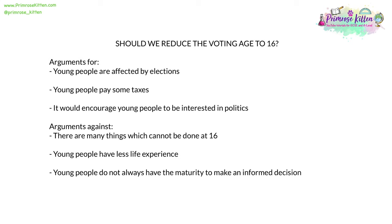A key question in this unit is: should we reduce the voting age to 16? There are arguments for and against. Arguments for include that young people are affected by elections, they pay some taxes, and it would encourage young people to be more interested and involved in politics and current affairs. Arguments against include that there are many things which cannot be done at 16, young people have less life experience, and do not always have the maturity to make an informed decision when voting.